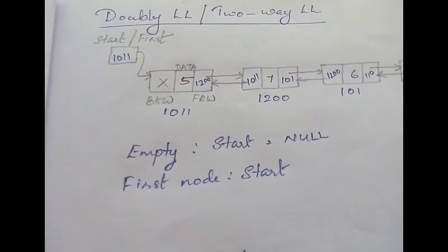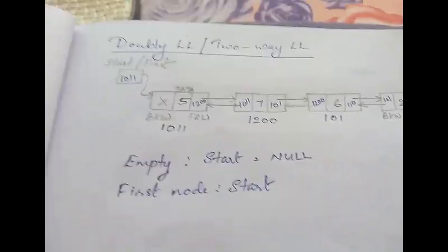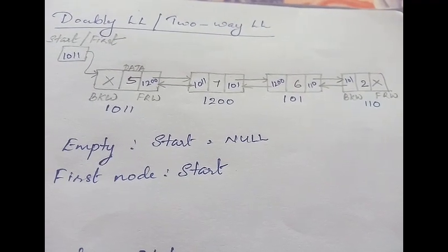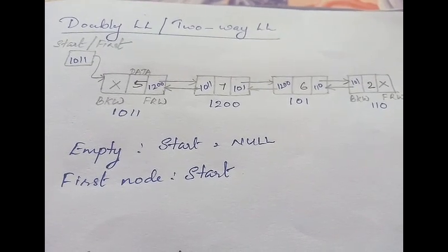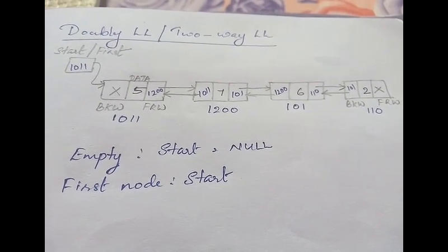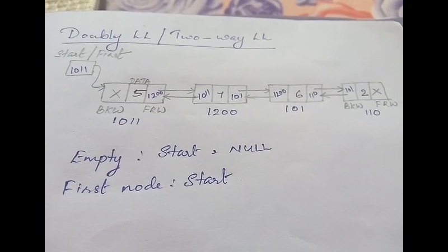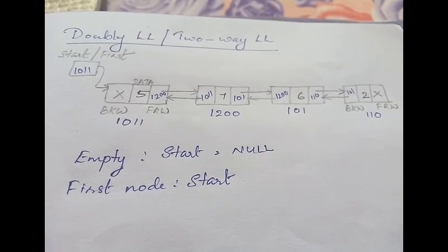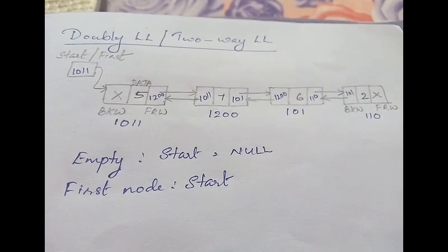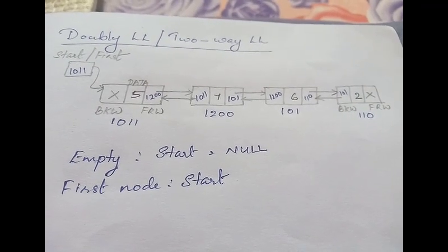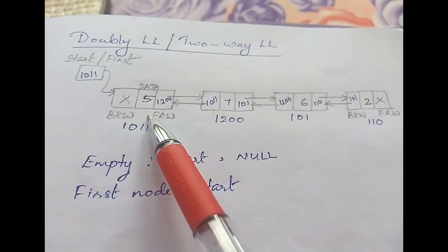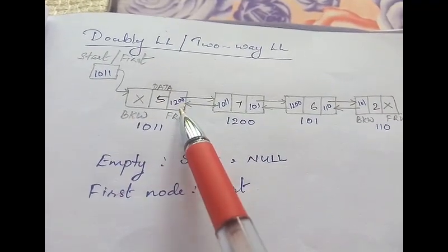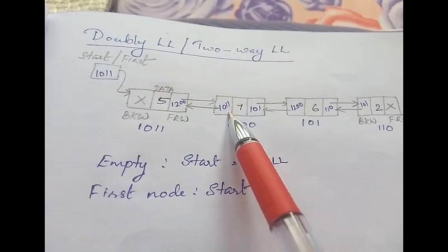Next comes the doubly linked list, also called the two-way list. In a singly linked list each node has two parts — data and link — but in a doubly linked list each node is divided into a minimum of three parts, because doubly or two-way means you have access in two directions. In a singly linked list you can only traverse in the forward direction, but in a two-way list you can traverse both forward and backward. To traverse backward you need to store the address of the previous node. So each node has one part for data, one for the forward link, and one for the backward link.